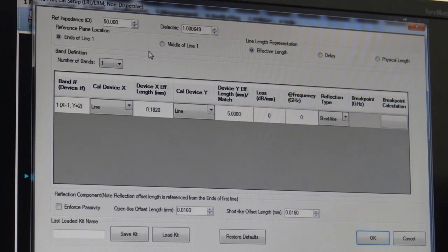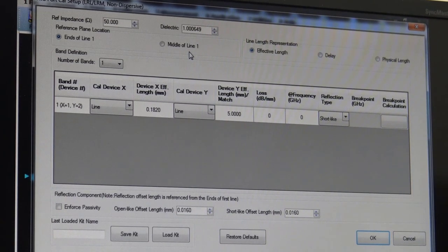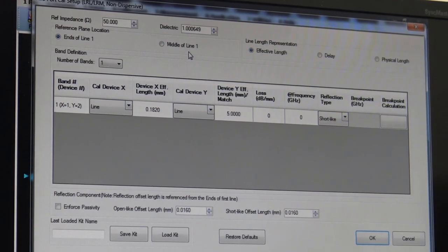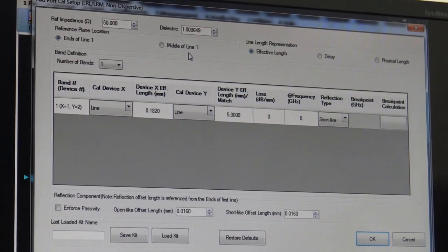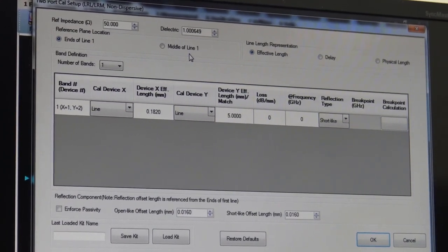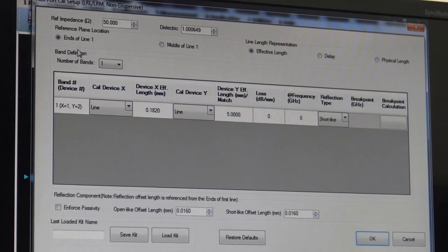We start off, first of all, defining whether or not we're going to locate our reference plane at the end of the line or in the middle of the line. If we know that our DUT is located at the equal distance of half the length of our through calibration standard, then we can choose middle of line. That will automatically then locate the reference plane to the port of the DUT rather than include the line from the pad to the DUT. In this case, we're going to use end of line. And so now we'll be calibrated at the ends of or at the tips of the probes. We'll then be measuring everything from the pad along the transmission line to the DUT and include the DUT measurement. So we've selected the end of line here.